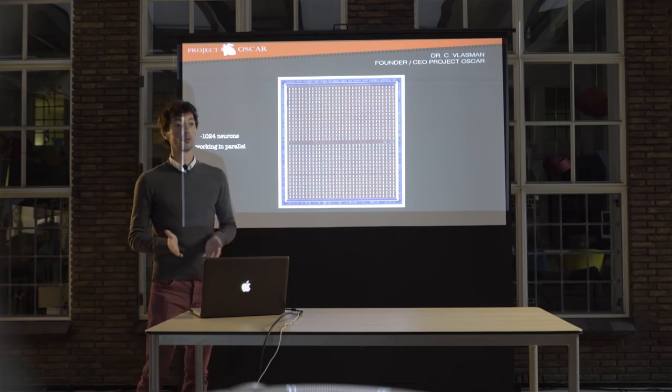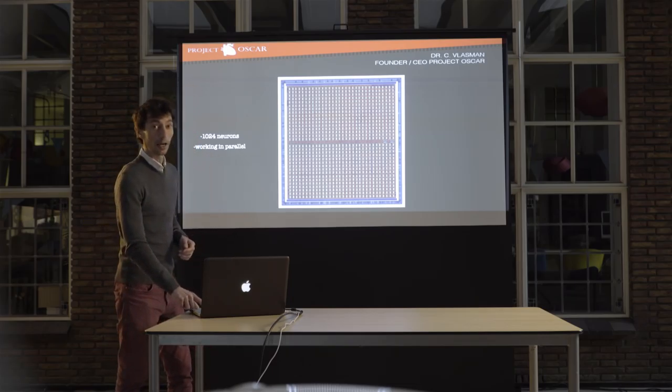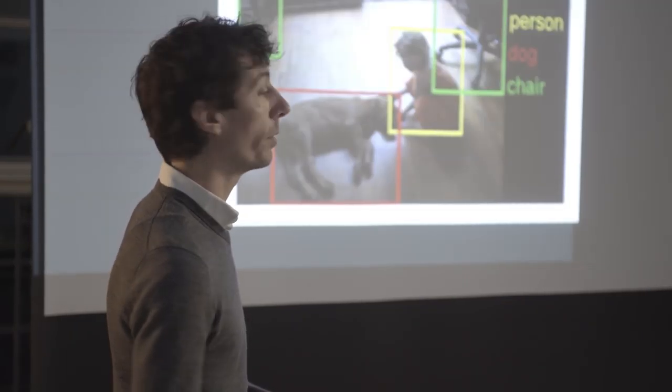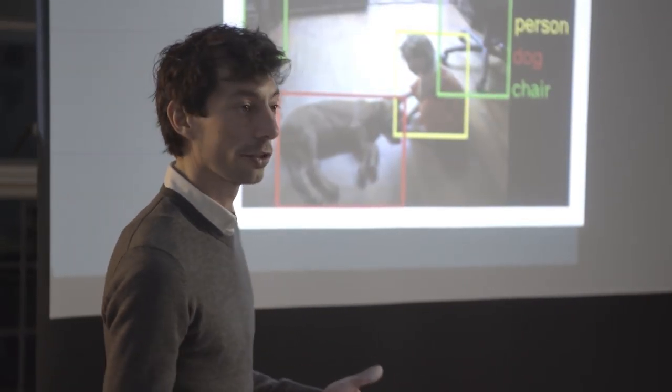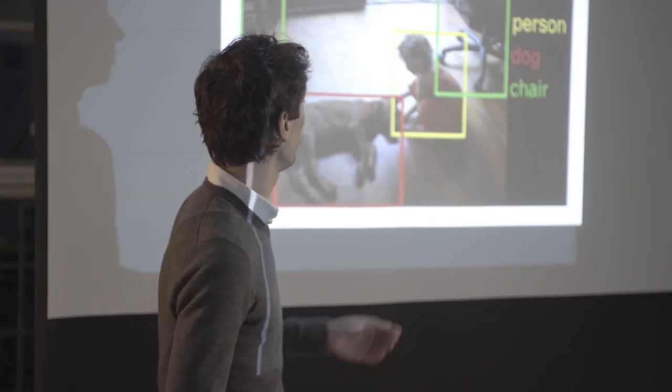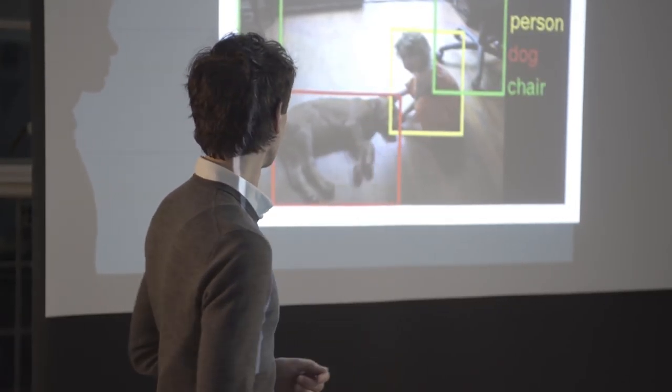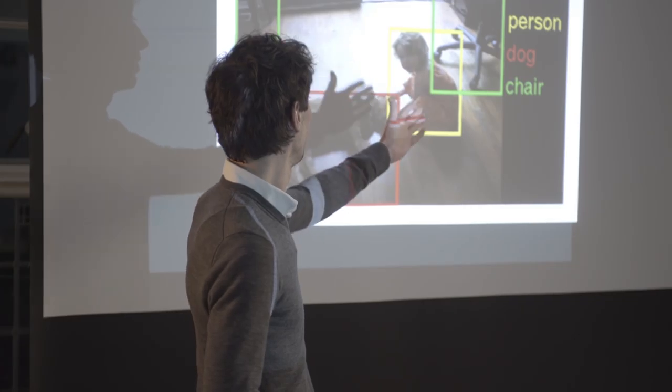Right now we're not using it to its full potential, but when we have connected the image recognition device, we can start teaching Oscar to make the difference between objects, shapes, and colors. This is a chair, this is a child, this is a brown dog.